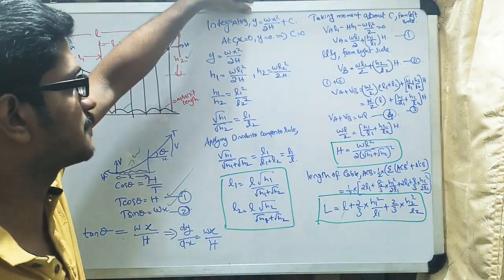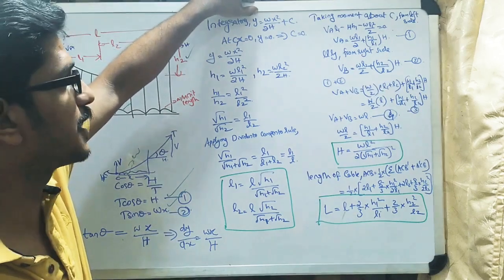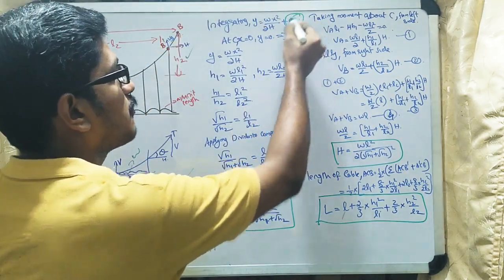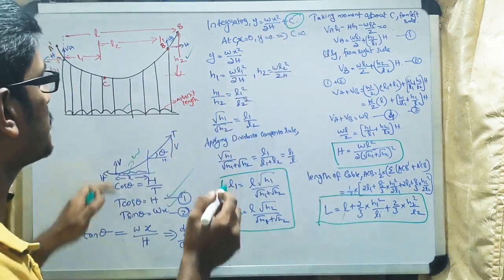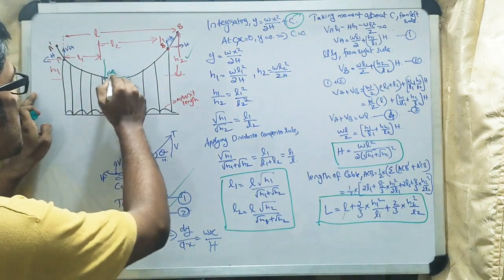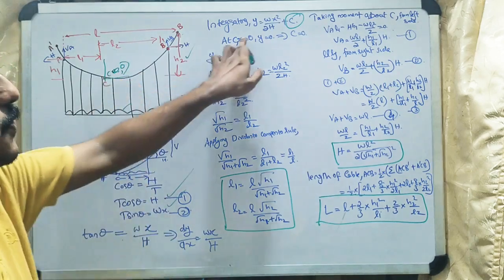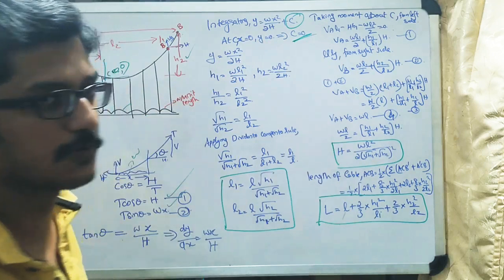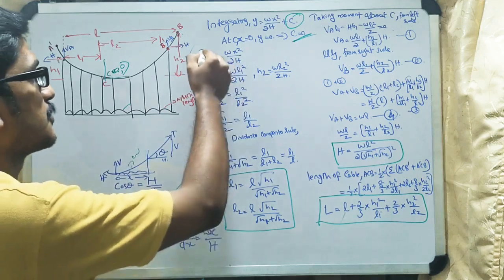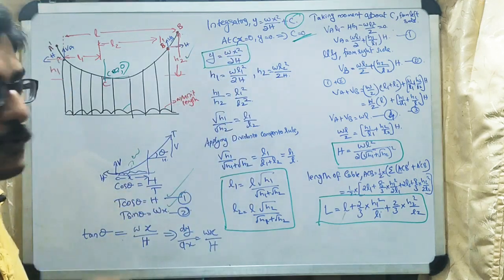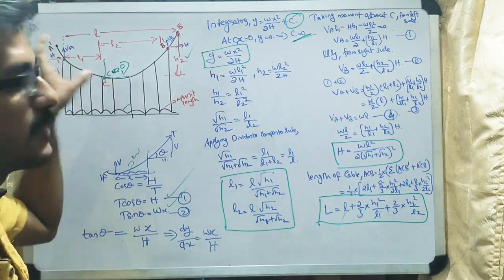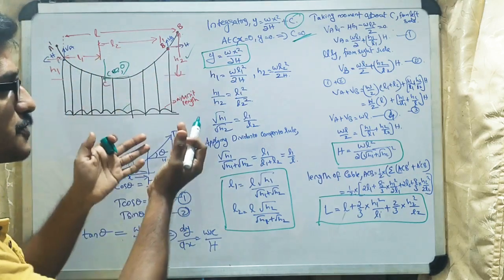Integrating dy/dx gives y = wx²/(2H) + C. We consider point C as our origin, so the constant C equals zero. The equation becomes y = wx²/(2H). We now need to relate this equation to the dip values h1 and h2 and the horizontal distances l1 and l2 by substituting the appropriate values.